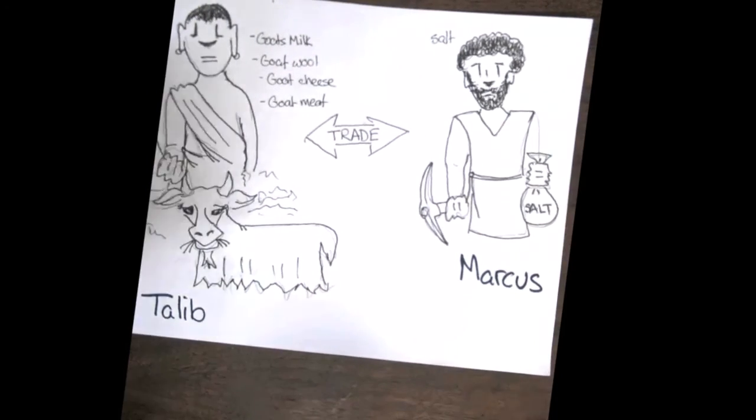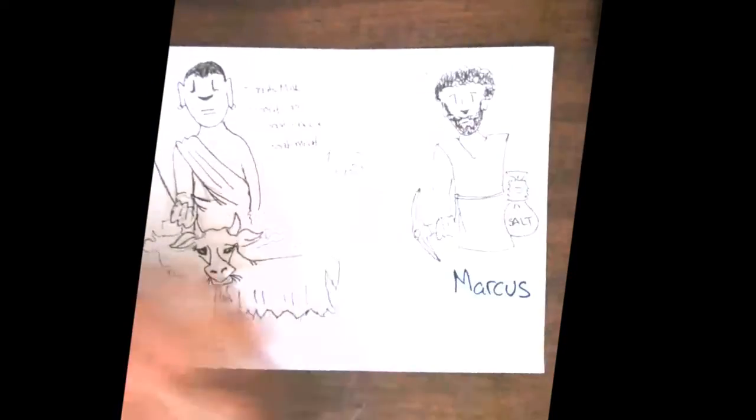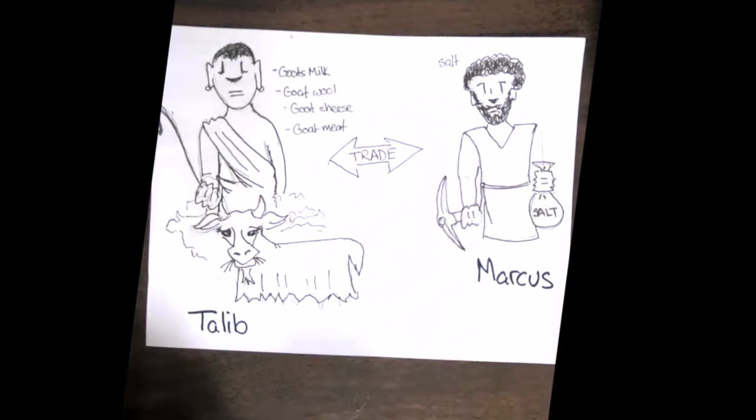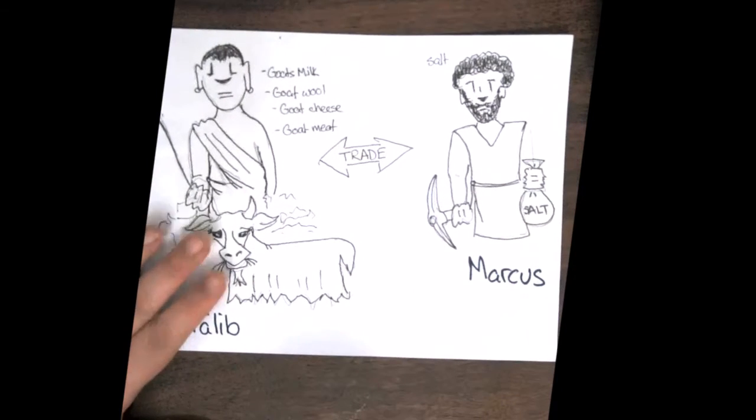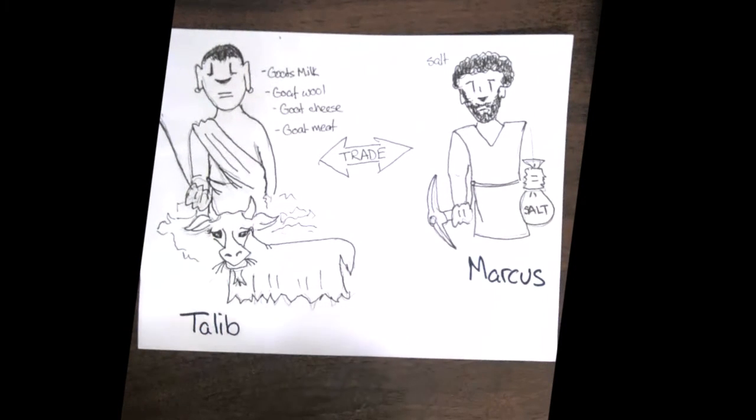Alright, for today's video we have two guys, Tlaib and Marcus. Tlaib is a goat farmer. He has goat milk, goat meat, goat wool, goat cheese. He's got a lot of goat stuff.